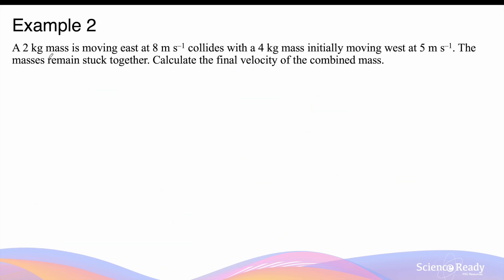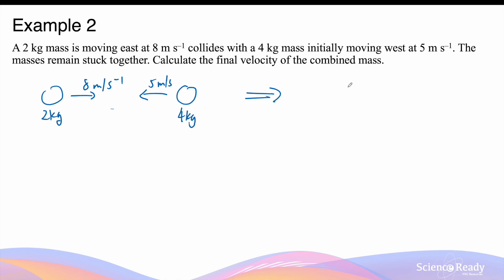A 2 kg mass is moving east at 8 m/s and collides with a 4 kg mass initially moving west at 5 m/s. The masses remain stuck together after the collision. Calculate the final velocity of the combined mass. This is an example of an inelastic collision. The two objects are moving towards each other before they collide, and after they collide they move in the same direction together as a combined mass of 6 kg. Whether they move left or right, we need to calculate the momentum after the collision.